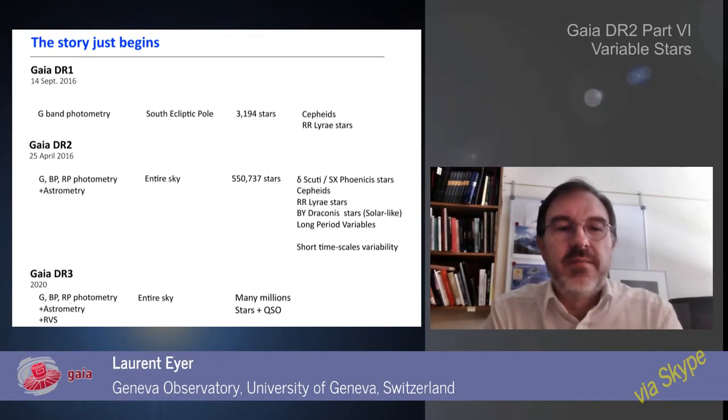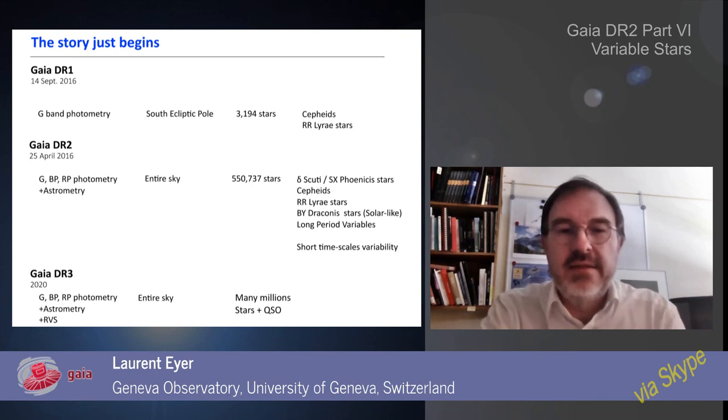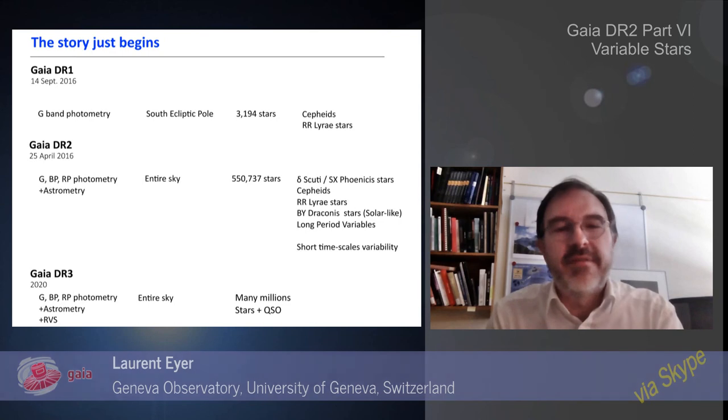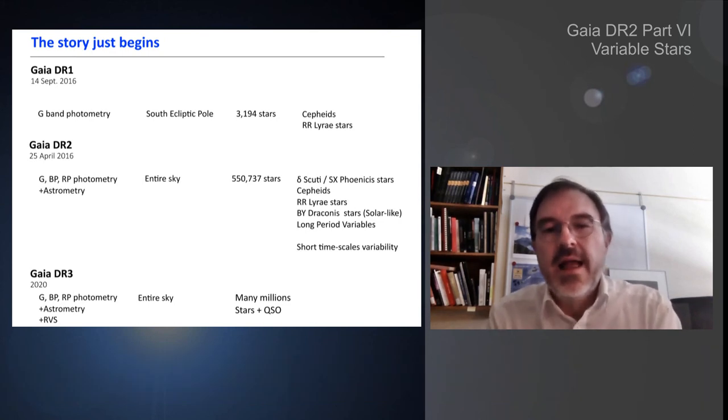In the following data releases, we will not only use BP, RP, and G photometry, but the spectrophotometry, the astrometry, and the RVS instrument. That will go to the entire sky with enough measurements everywhere. We will probably have many, many millions of variable objects, stars or QSOs.